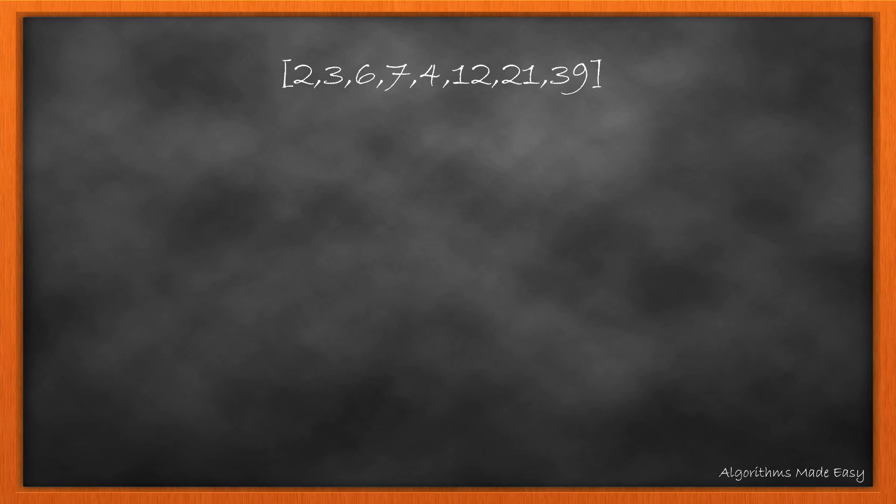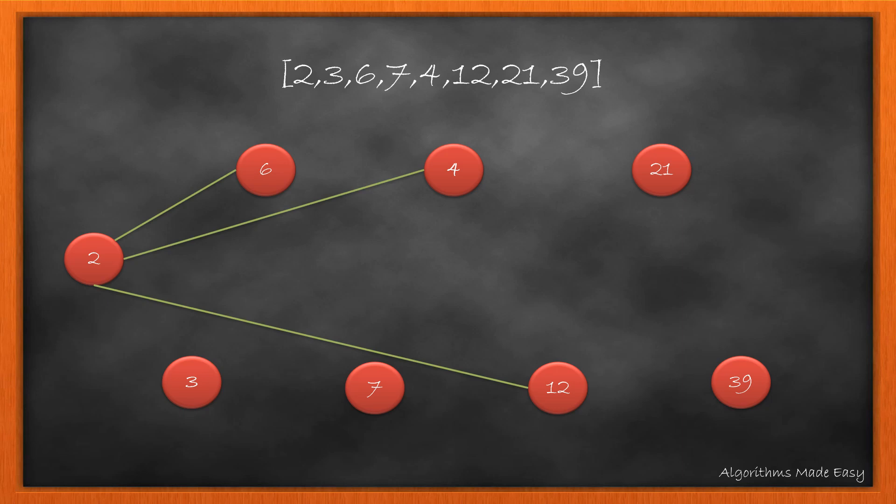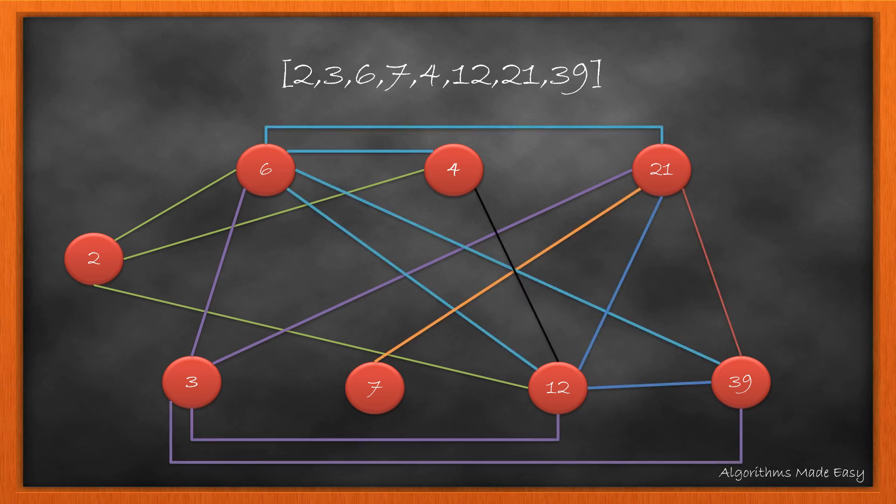These are the numbers given in the input. If we make a node for every number and then start connecting the values which share the factors, then the picture becomes a little clearer. Starting with 2, we see that 2 is a common factor in 6, 4 and 12. Now we connect 3 and see it is common in these many numbers. When we connect all the numbers with the common factor with each other, we get this graph.